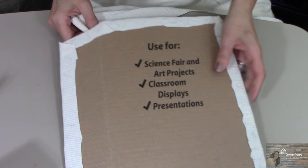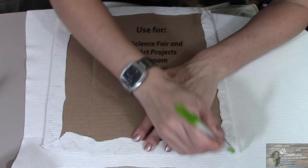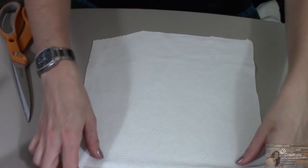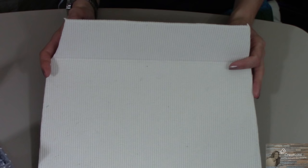Next, we are going to take and trace this one more time. And this time, we are going to cut right inside the line. I'm going to flip it over and I'm going to spray this side with the Krylon spray adhesive. My lid is completely covered.